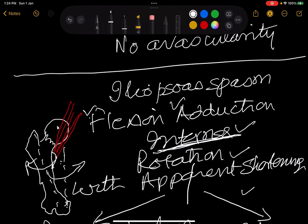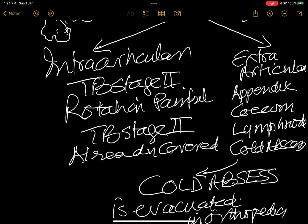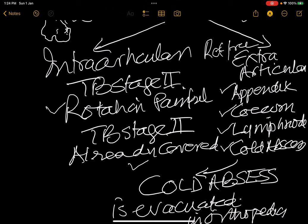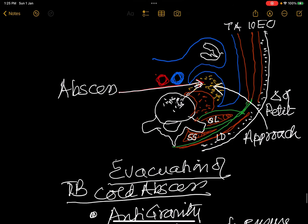Iliopsoas spasm can be intra-articular — such as in TB stage 2, where rotation is painful — or extra-articular, where rotation is free. Extra-articular causes include appendicitis, typhlitis (cecum inflammation), lymphadenitis (usually filarial), and a cold abscess. Cold abscess falls within the field of orthopedics. It originates from the intervertebral disc involved in tuberculosis spreading into the psoas sheath.